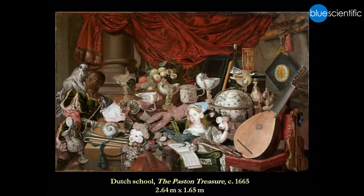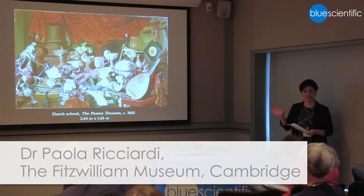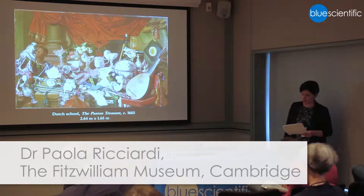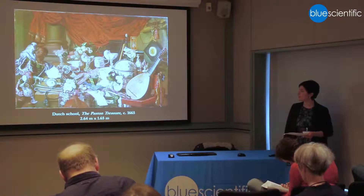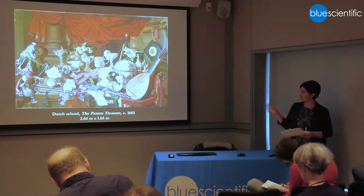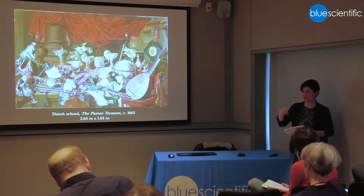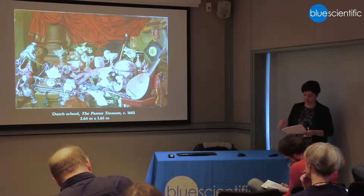My last example is the painting I promised to talk about: the so-called Paston Treasure, a large oil painting on canvas. It's also a rare record of a cabinet of treasures in British collecting. It was commissioned by Sir Robert Paston in the second half of the 17th century, probably painted by a Dutch artist, and it depicts the Paston family's treasures collected during travels, not just in Europe but as far as Jerusalem.